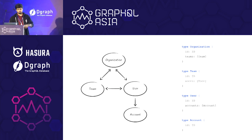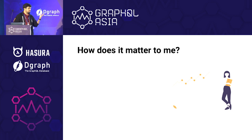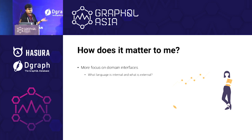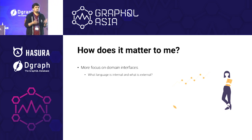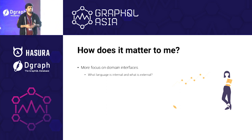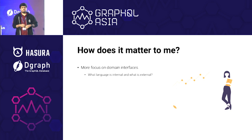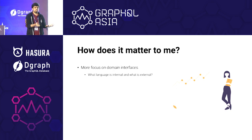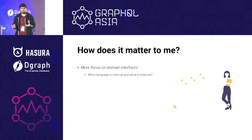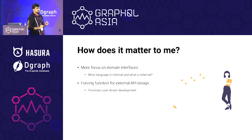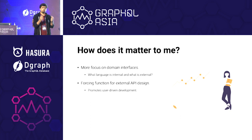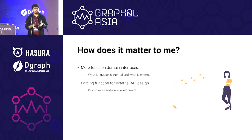You might ask how it helps you. The way it helps primarily is it helps you focus on domain interfaces. When we work in teams, we all have certain languages and terms we are used to, but they might not be terms users understand or people outside your team understand. This approach helps you limit those and build an API which is user-focused. This structure acts like a forcing function to build an API which is external-facing, not looking inside-out.